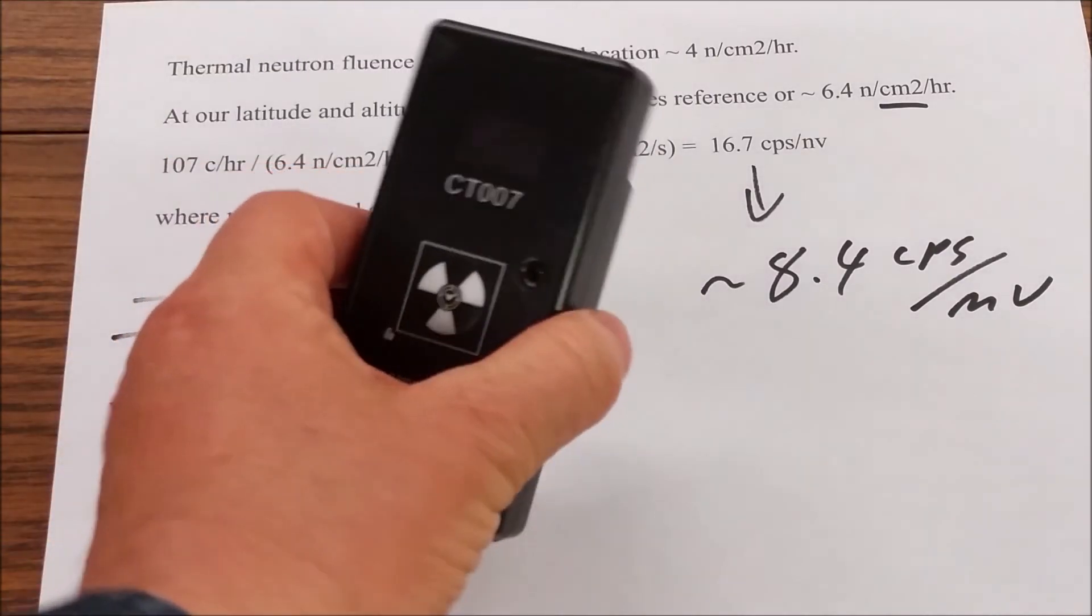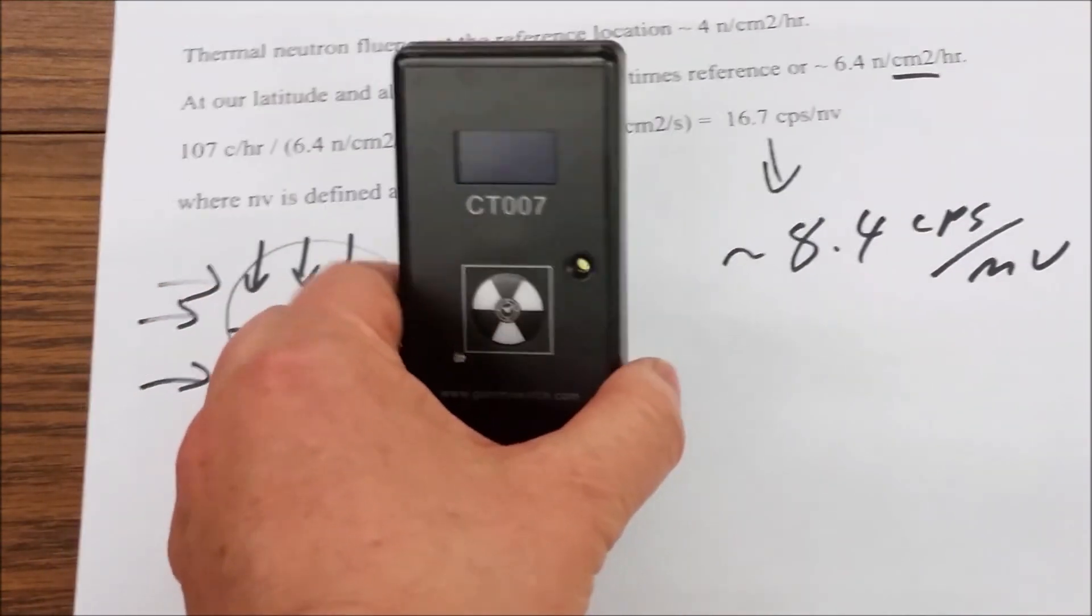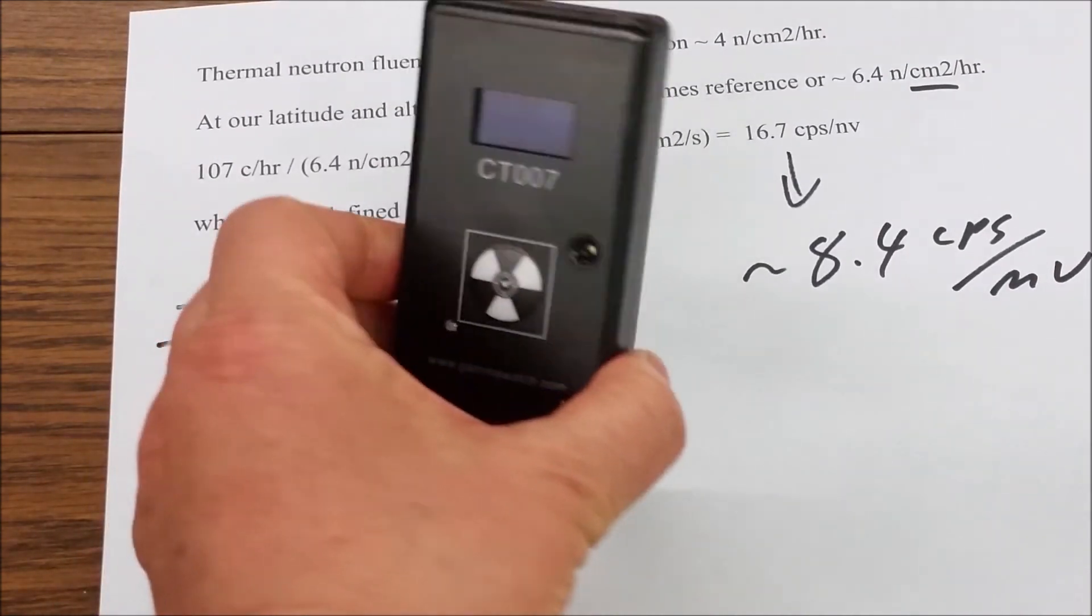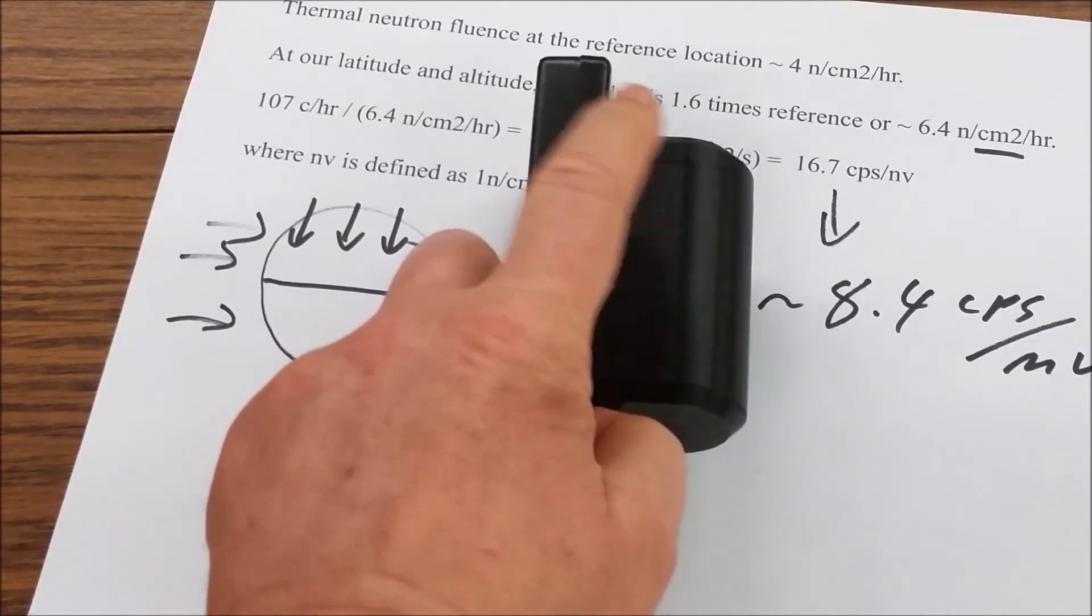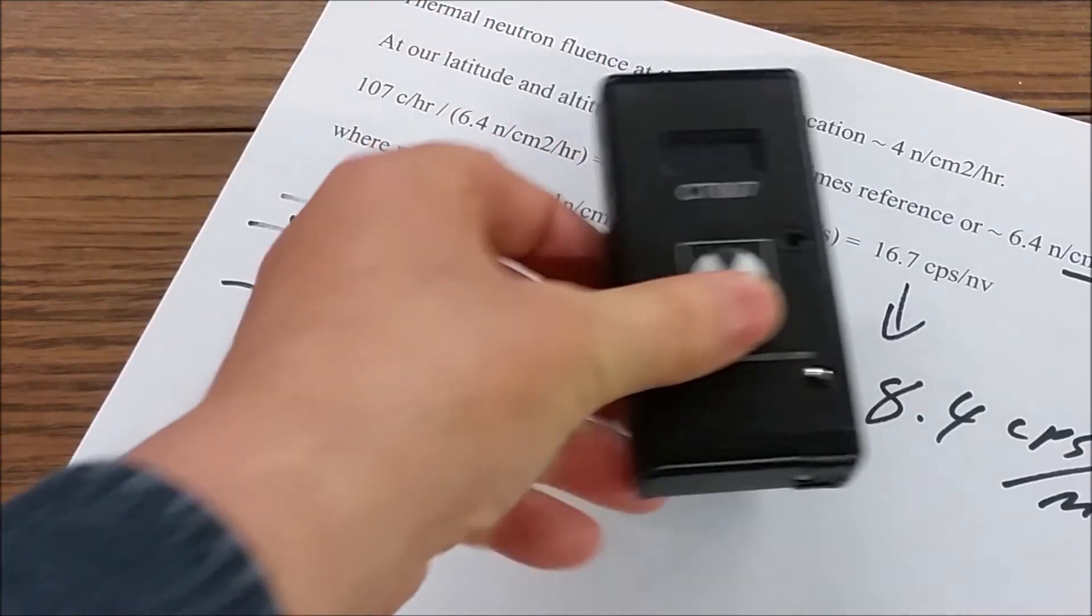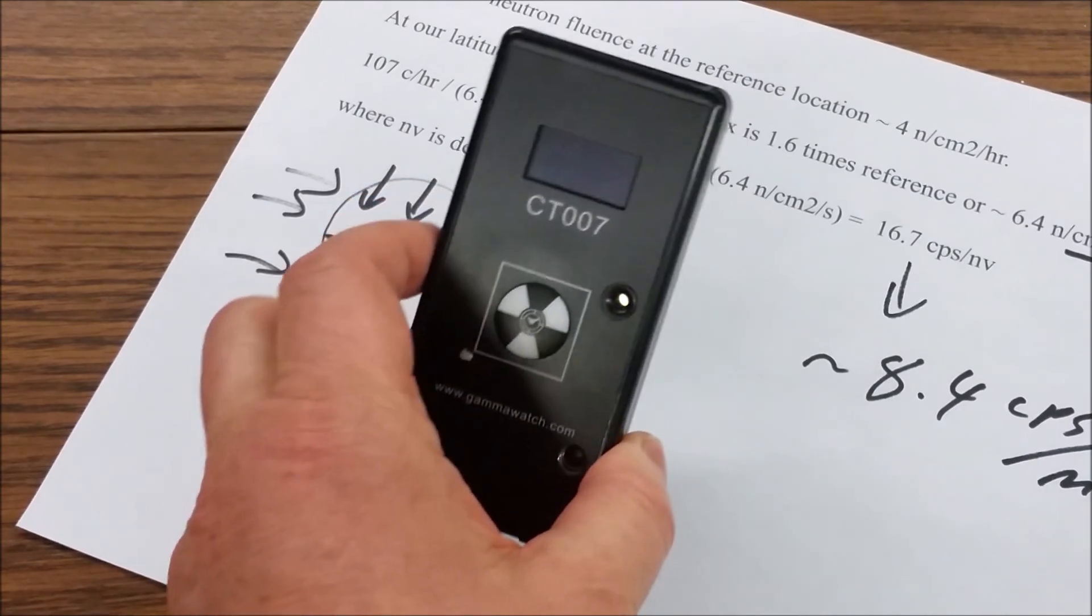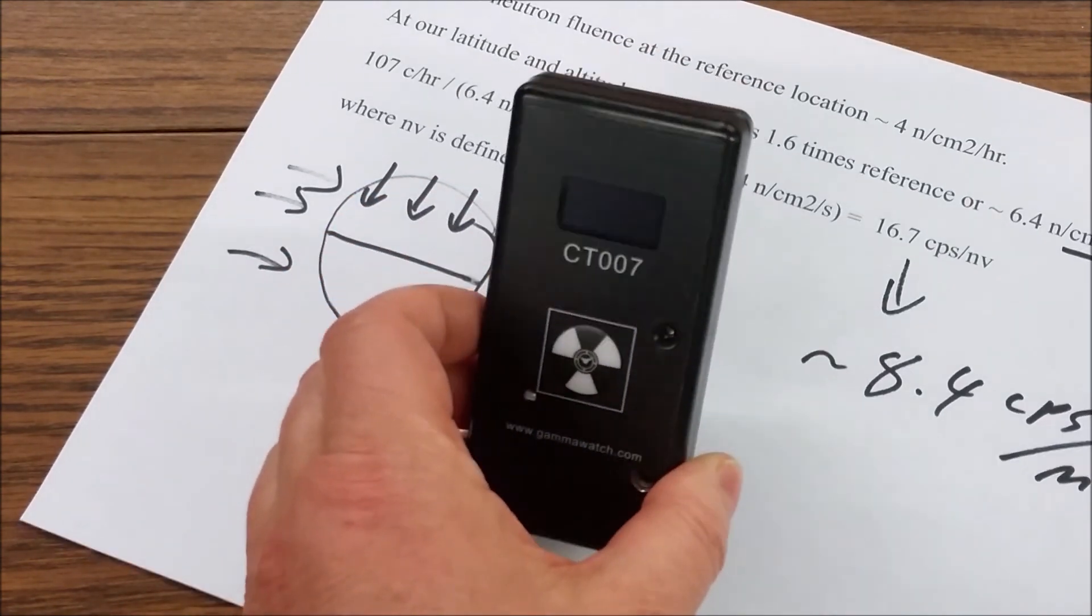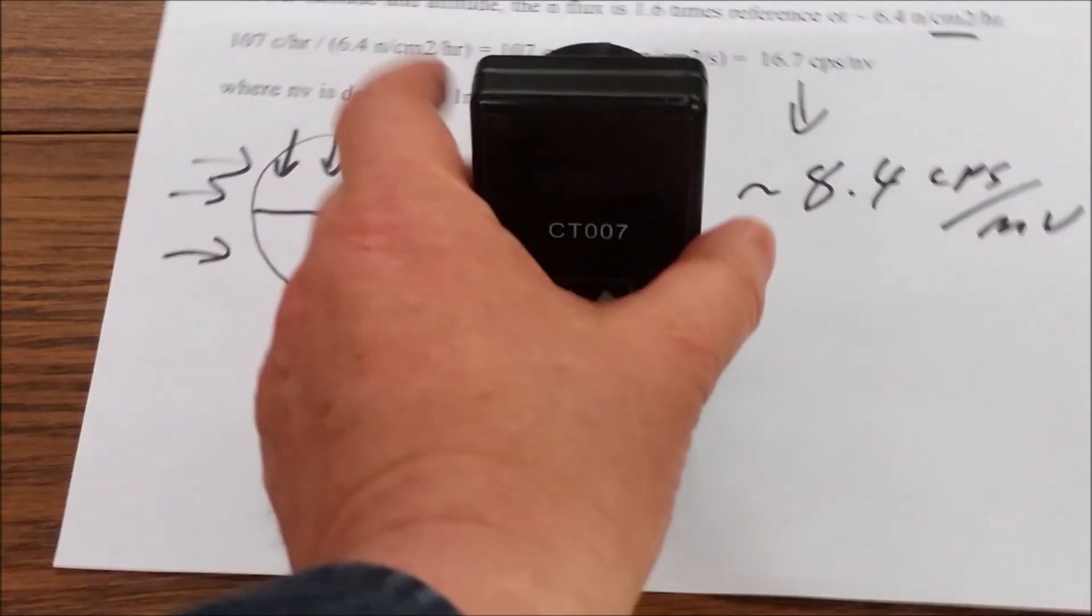So this is pretty much also the highest efficiency that I've ever seen recorded for a detector of this size and weight. The business end of the detector is just inside here and the rest is our little display. It goes in the same display, same firmware as most of the rest of our CT007 product line.